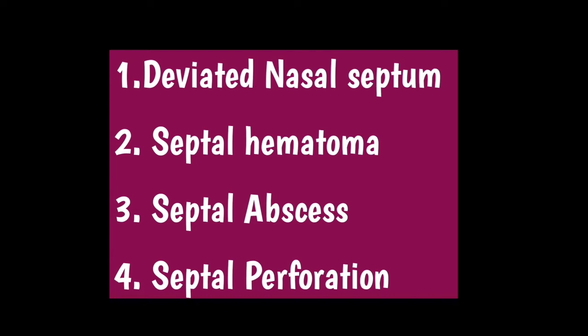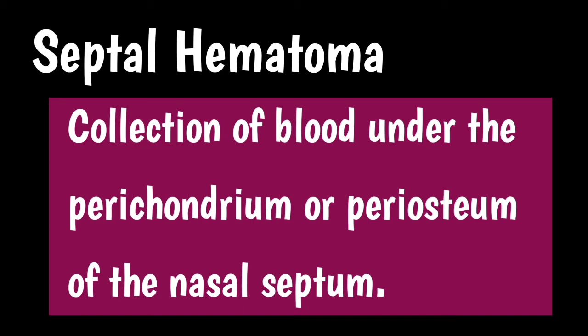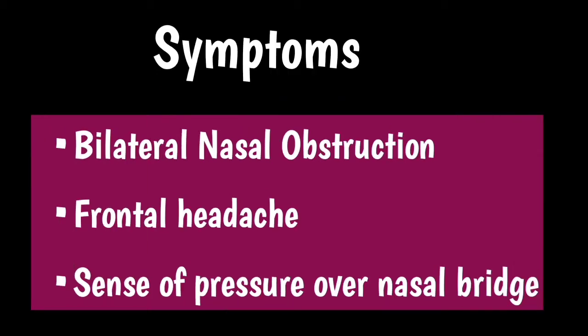Let's get started with septal hematoma. Septal hematoma is basically a collection of blood under the perichondrium or periosteum of the nasal septum. The main cause, like that of DNS, is trauma to the nose, or it can occur due to septal surgery. In bleeding disorders it may occur spontaneously.